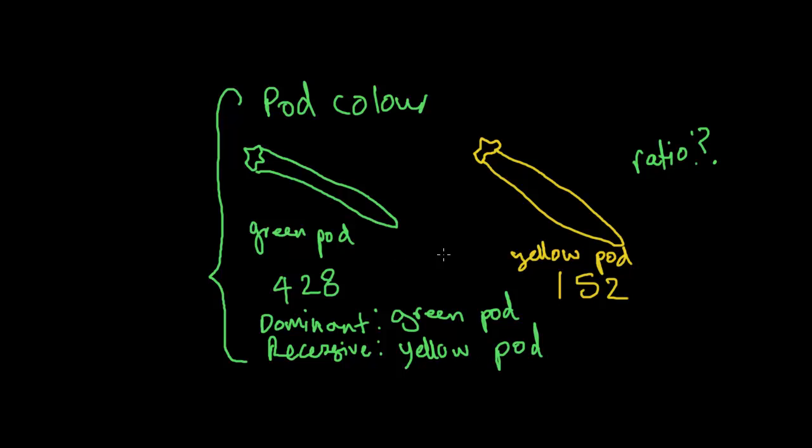Once again, the ratio, how can we figure this out? Well, it is the dominant divided by the recessive. So 428 divided by 152, and you end up getting something like 2.82 to 1. Perfect. That's all. Thanks for watching.